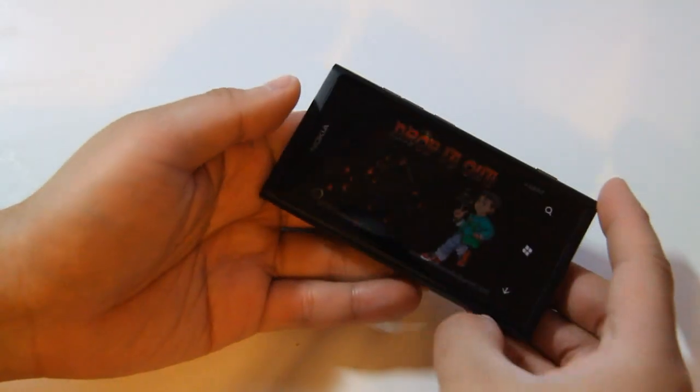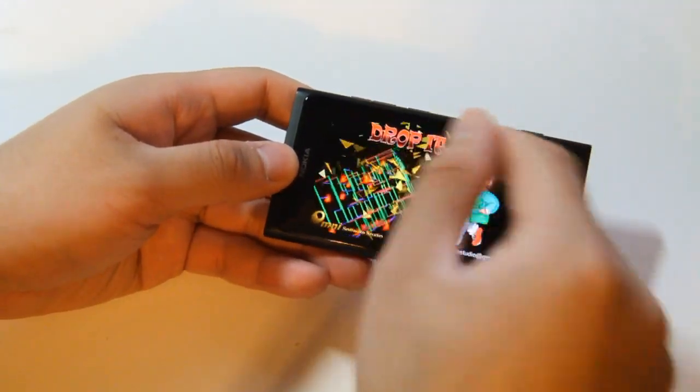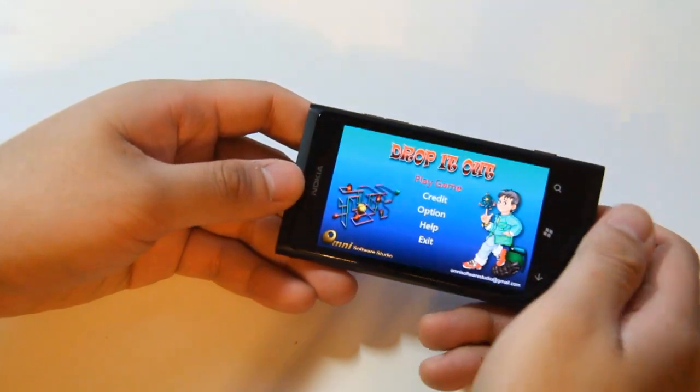Hey guys, it's Lumiapaday and this is Drop It Out. This is an accelerometer-based game where you've got this maze and this ball, and you have to tilt the device to get the ball out of the maze.